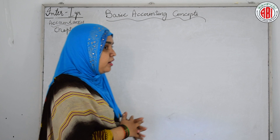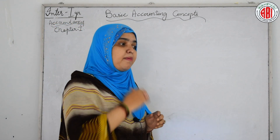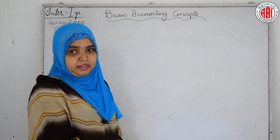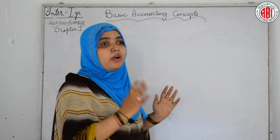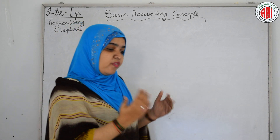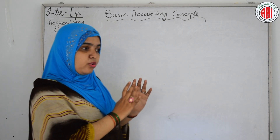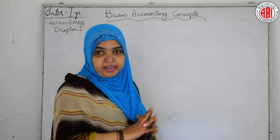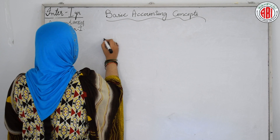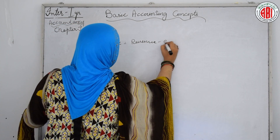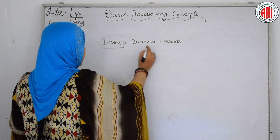Our next basic accounting term is income. Income is generated by selling. The income is the difference between revenue and expenses. Whatever revenue we are getting and whatever expenses we are incurring, we have to make the difference between them — whatever amount we are getting is income. Income = Revenue minus Expenses.